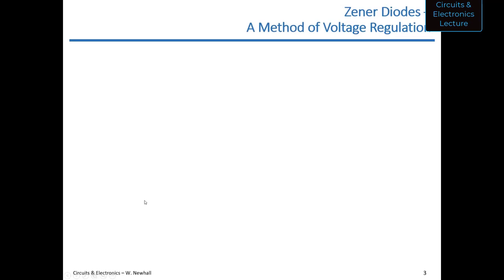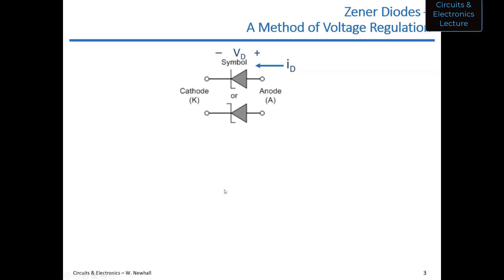We've talked about regular silicon diodes and LEDs. Now I'd like to introduce the zener diode, which is a critical part of a linear voltage regulator. Here are two symbols for a zener diode — the top shows a hockey-stick shape and the bottom a backwards S at the cathode — indicating this is not a regular diode. We define the voltage with the positive side of Vd at the anode, and current Id flows into the anode.